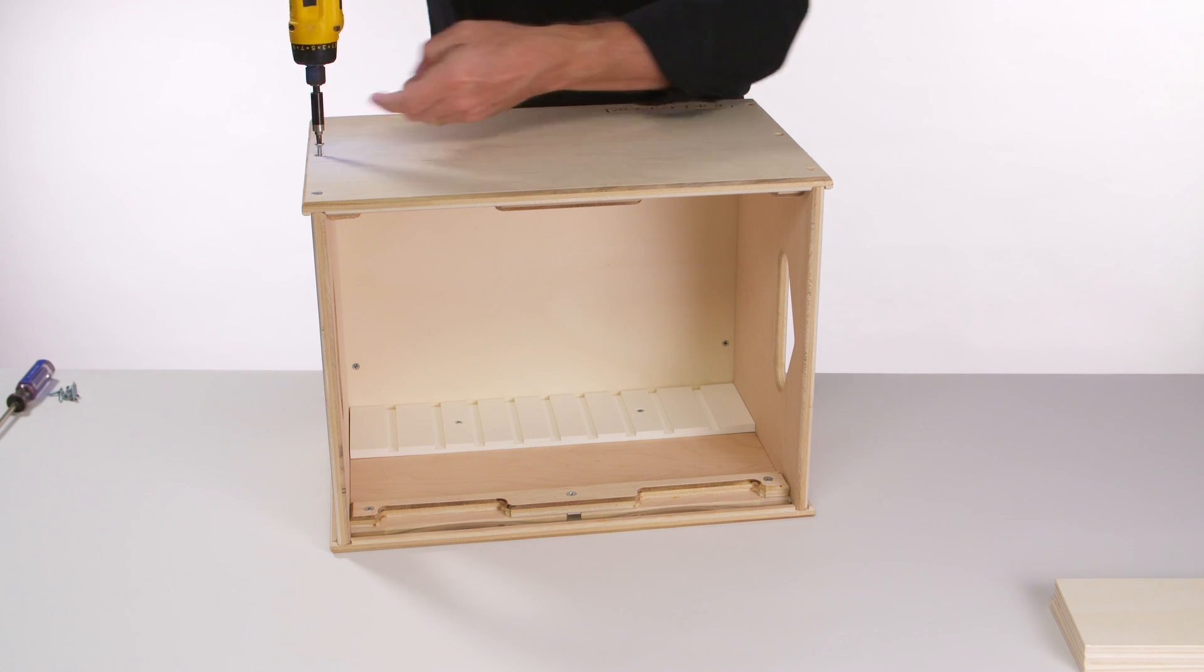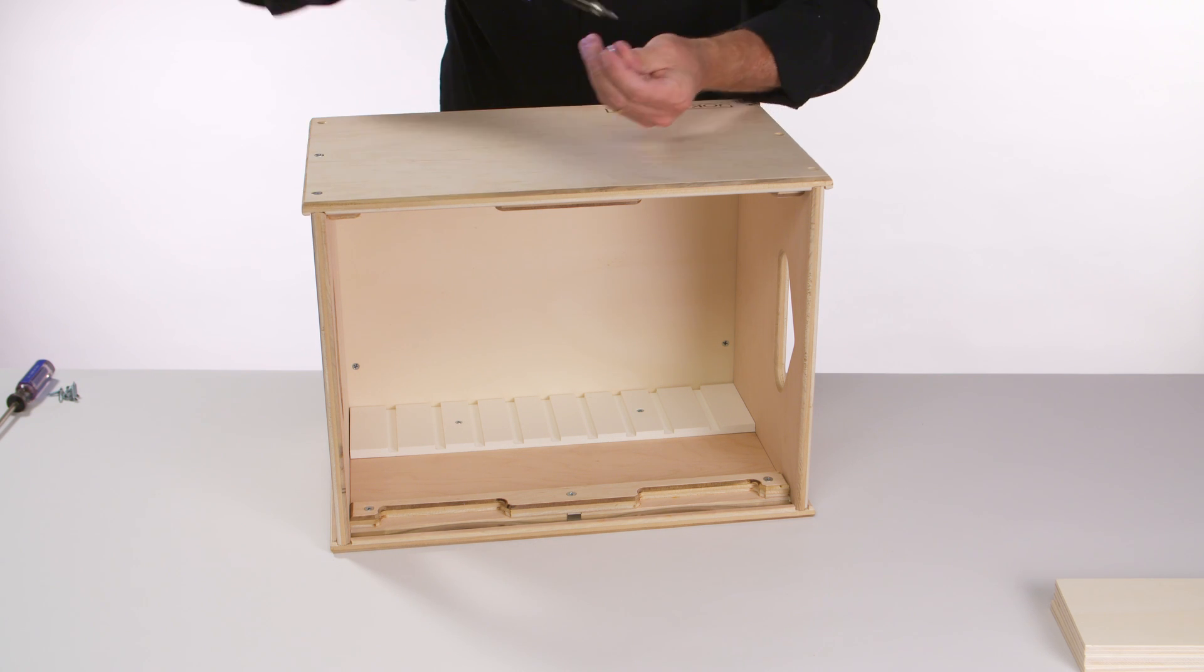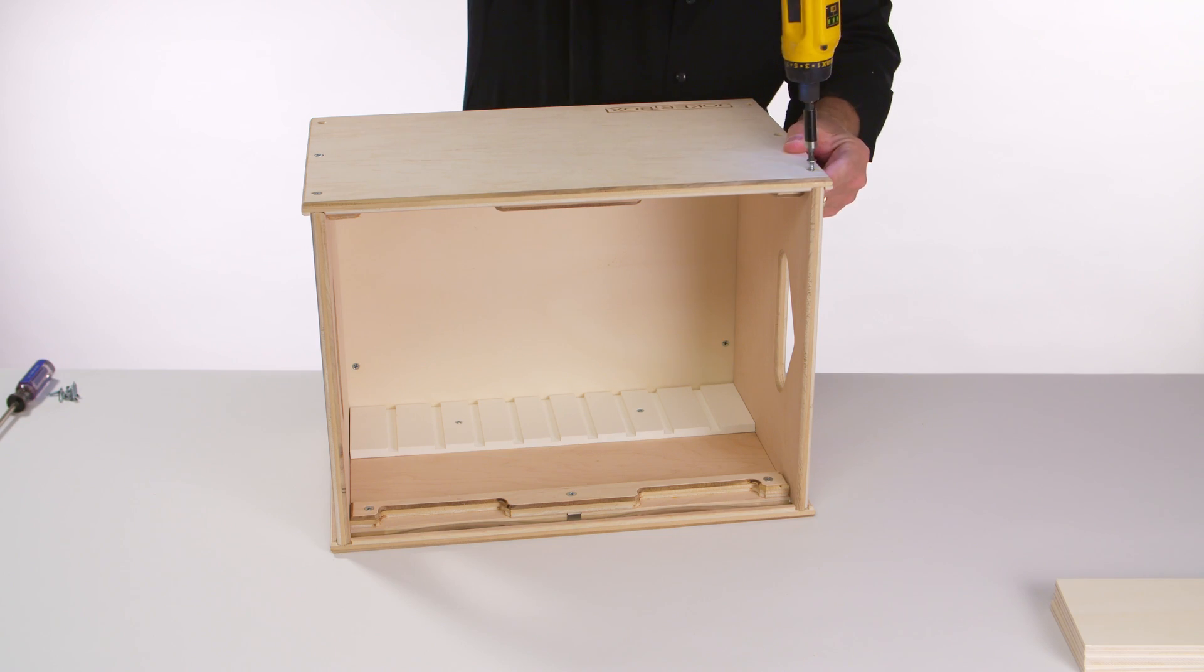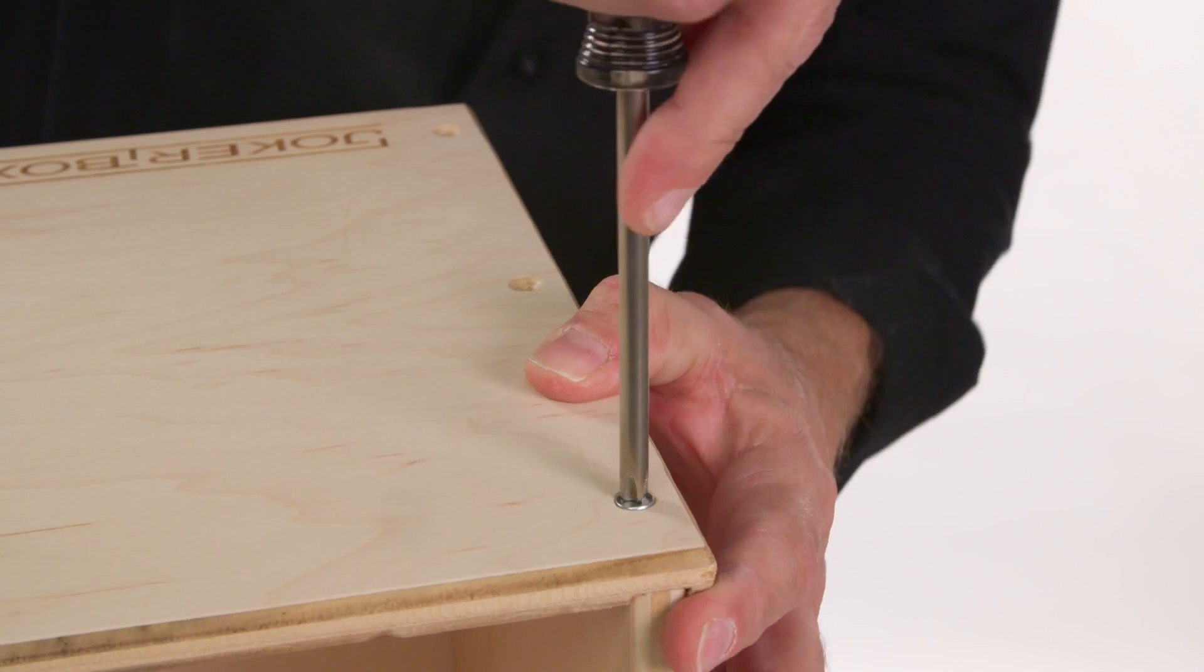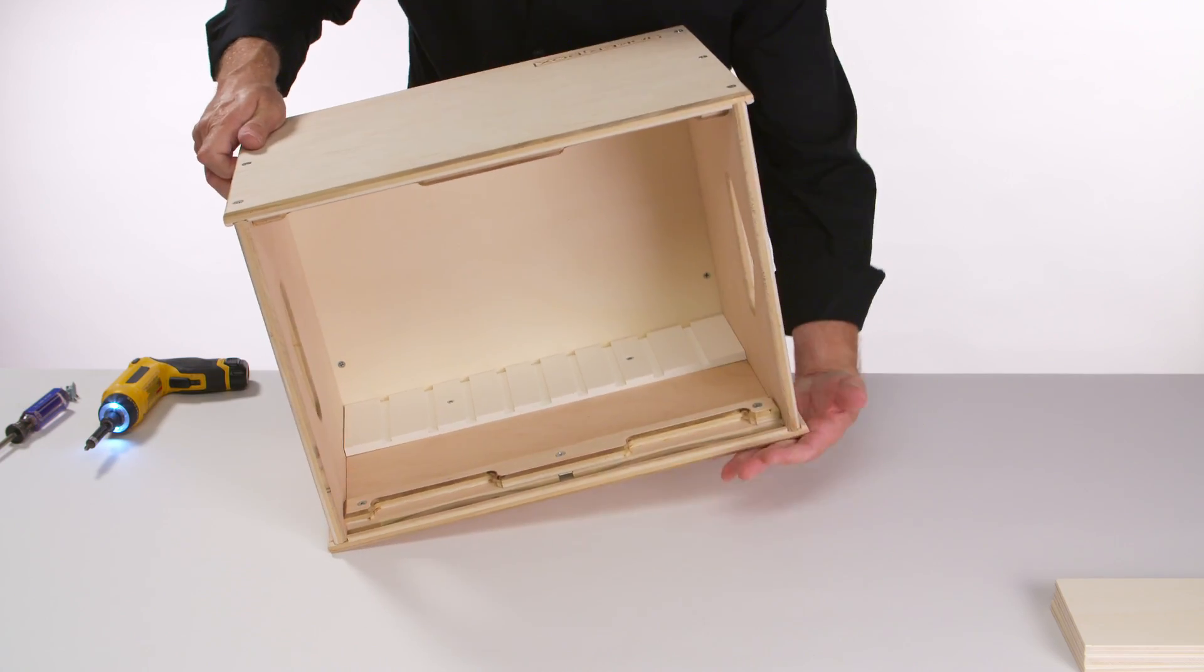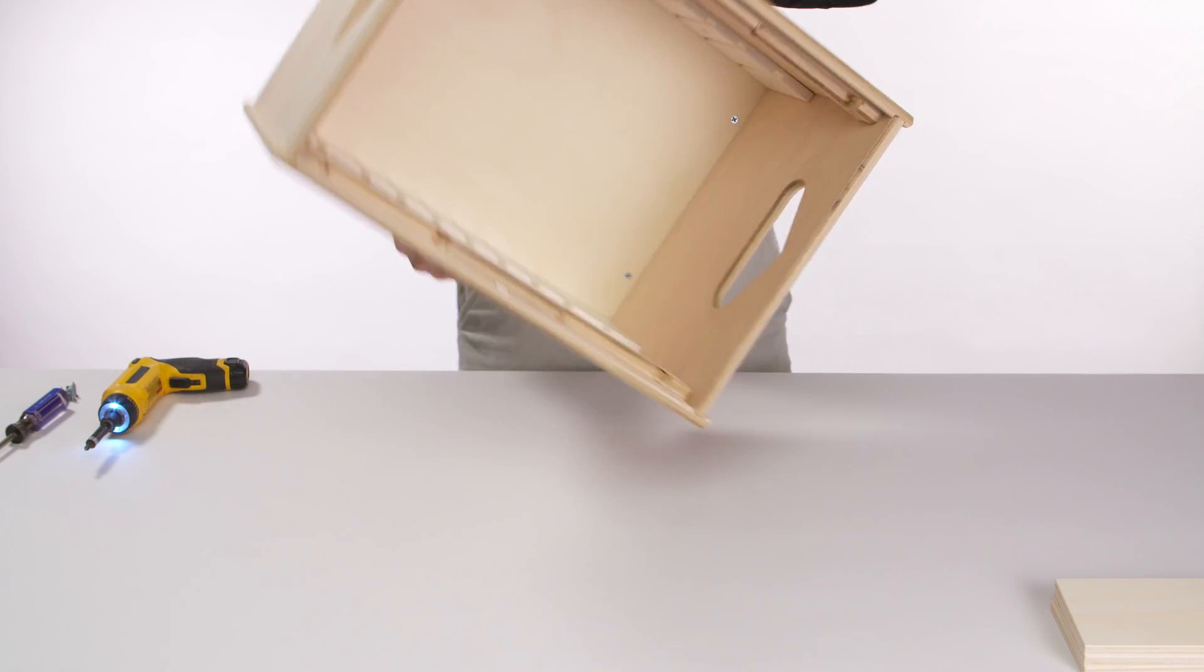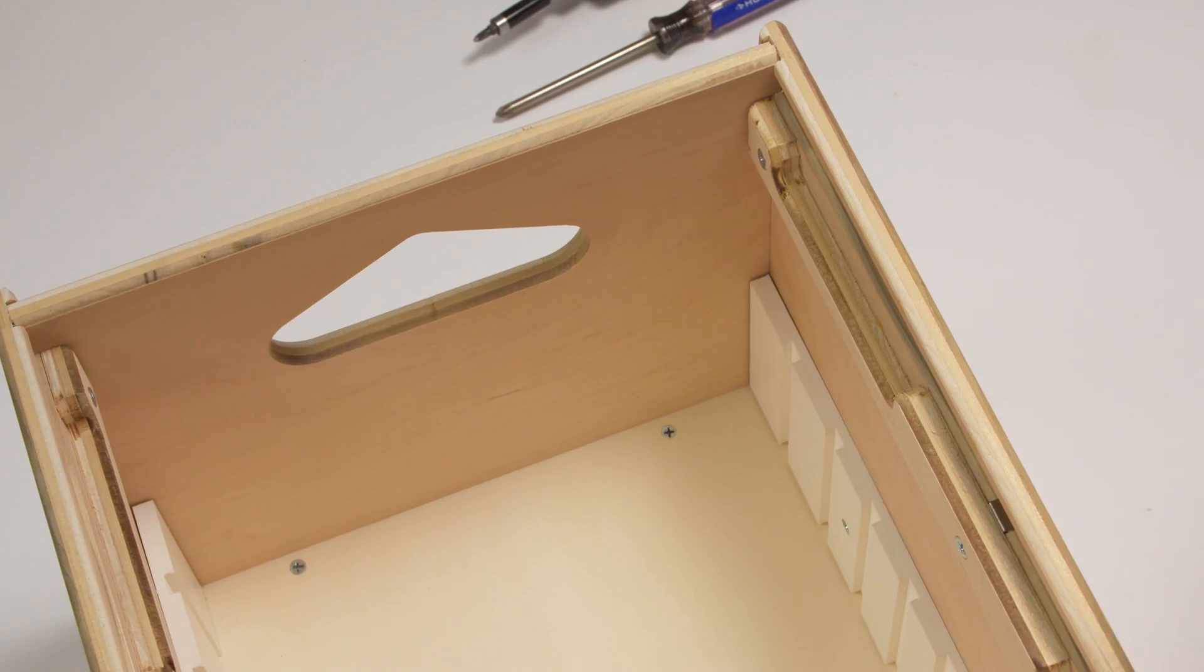Secure the long side with six screws. If you're using a cordless driver, my advice is to tighten the last couple of turns by hand to avoid over tightening and stripping out the screw holes. Now flip the box over while holding the unsecured side in place and install the last six screws.